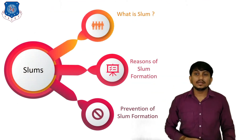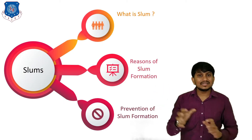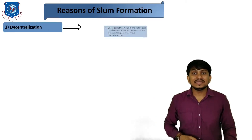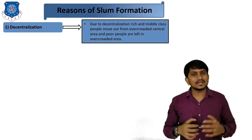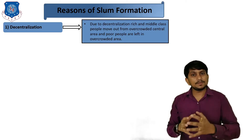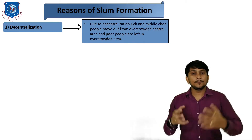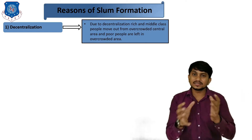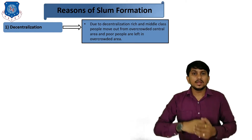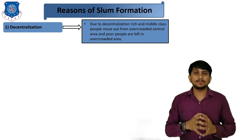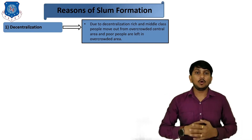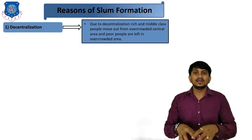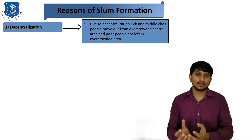Now let us understand the reasons for slum formation. First is decentralization — rich people are getting richer and poor people are getting poorer. Due to decentralization, rich and middle-class people move out from the overcrowded central area and poor people are left behind in the overcrowded area, which creates slums.